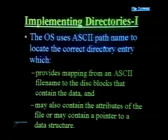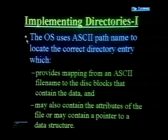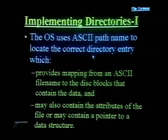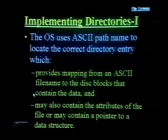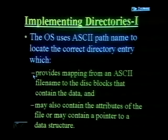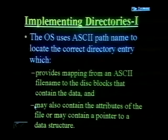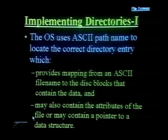The operating system uses the ASCII path name to locate the correct directory entry. The directory entry is a critical point which provides mapping from an ASCII file name to the disk blocks that contain the data. It may also contain the attributes of the file or pointers to a data structure.